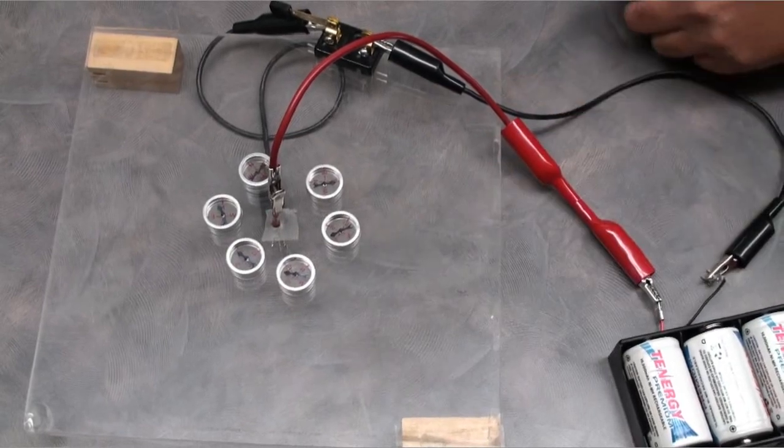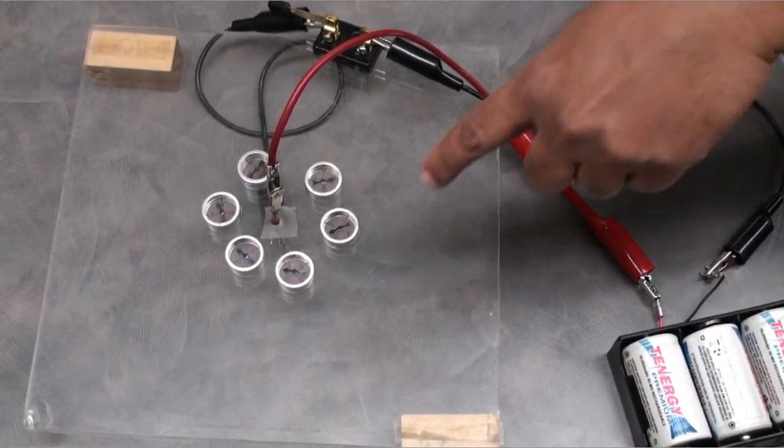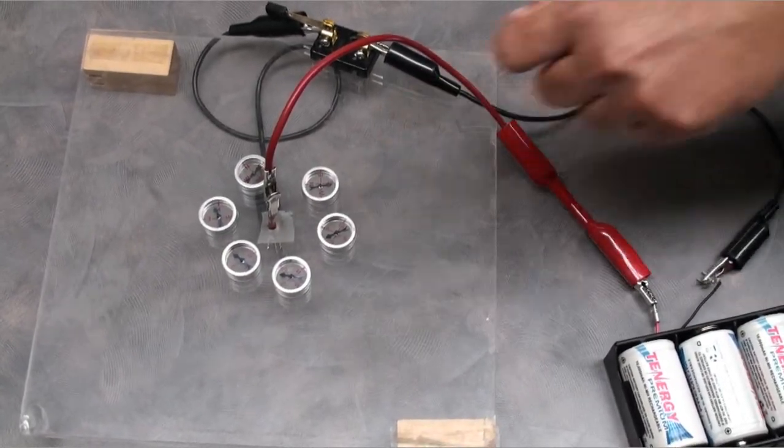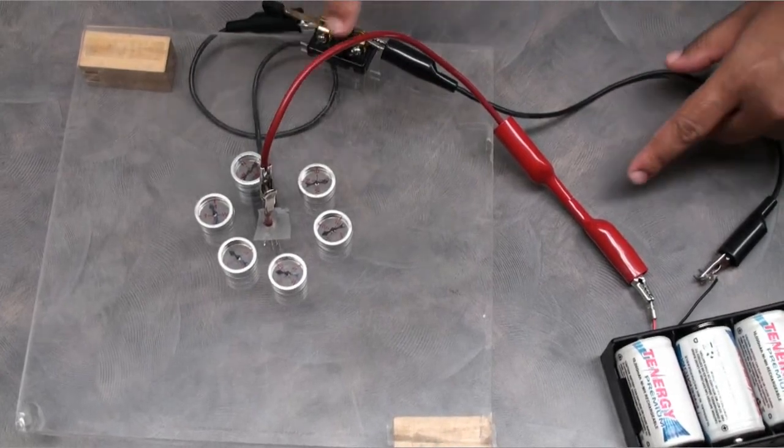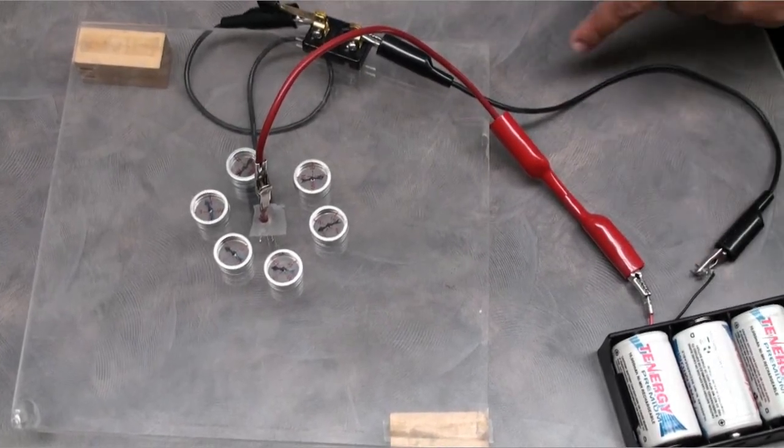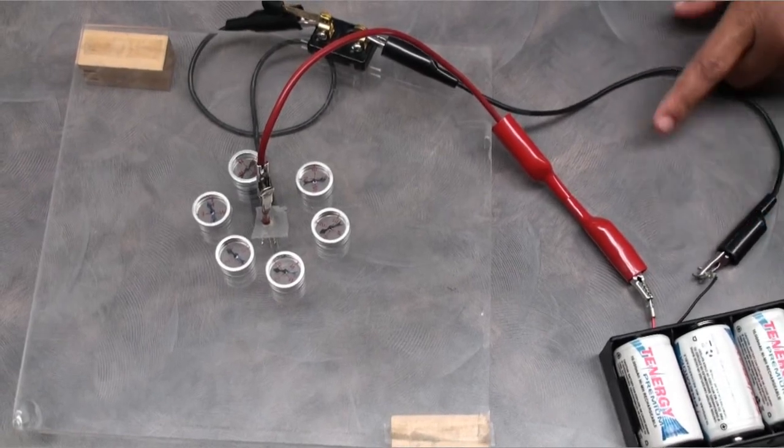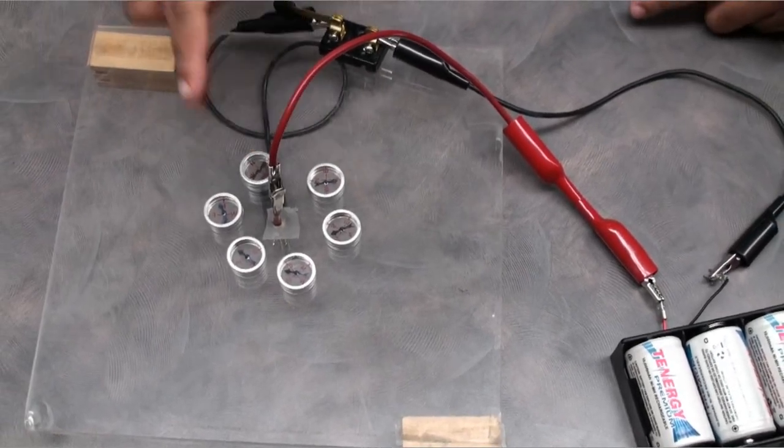So guys, this is a little demonstration for the magnetic field when you have a current carrying wire. You can see this red wire is connected to the positive terminal of the battery and the black wire is connected to the negative terminal of the battery, which means current flows from up to down.